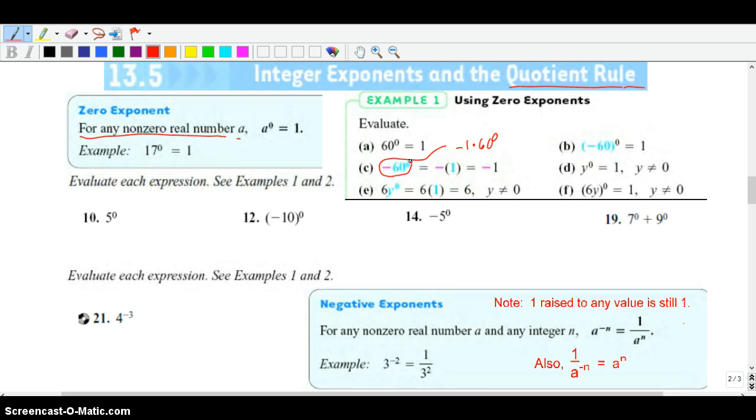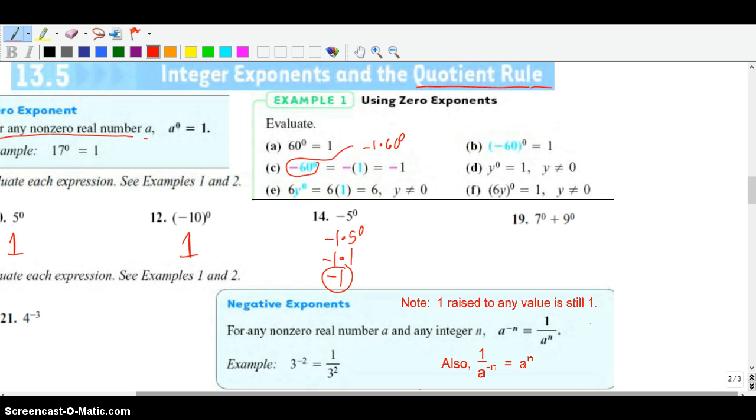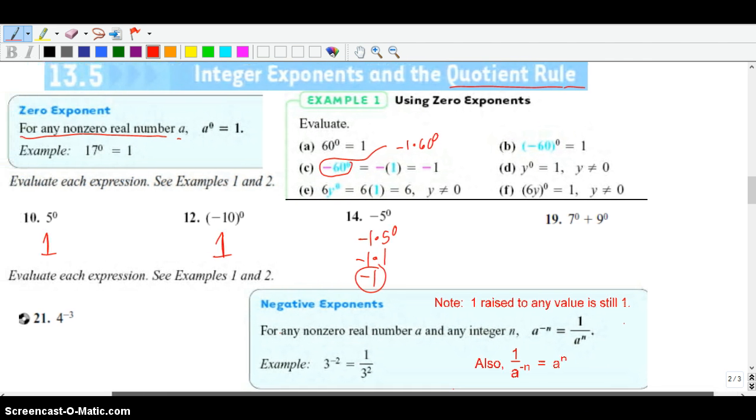Looking at these first couple examples, 5 to 0 is 1, negative 10 to 0 is 1. Right here, this is negative 1 times 5 to the 0 power, so it becomes negative 1 times 1, which is negative 1. Let's look at problem 19 right here.